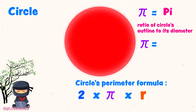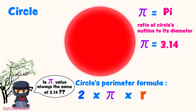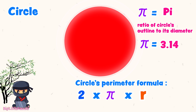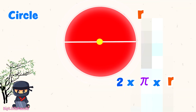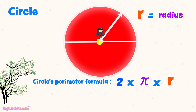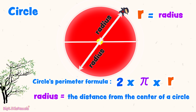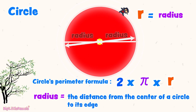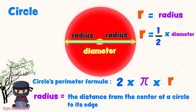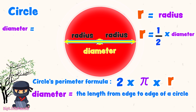We use pi as the value 3.14. This pi value is an approximate number and it is constant, meaning the value is always the same — whenever we use pi, the value is approximately 3.14. R in the formula means radius. The radius is the distance from the center of a circle to its edge. Radius is half the length of the circle's diameter. Diameter is the length from edge to edge of a circle through its center, so 2 times the radius equals the diameter.